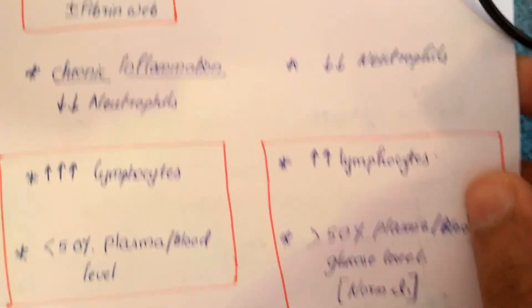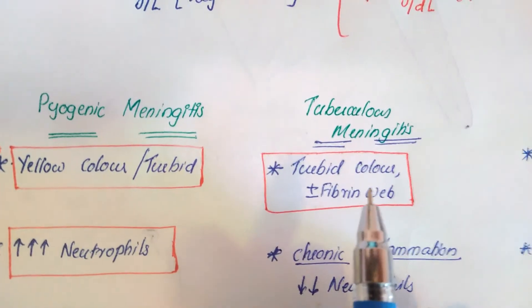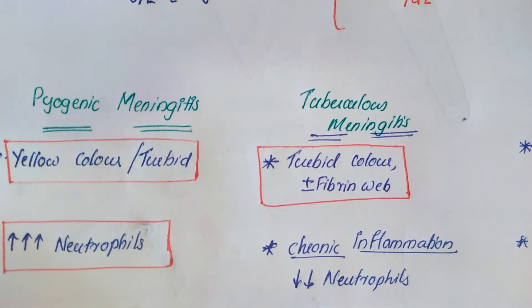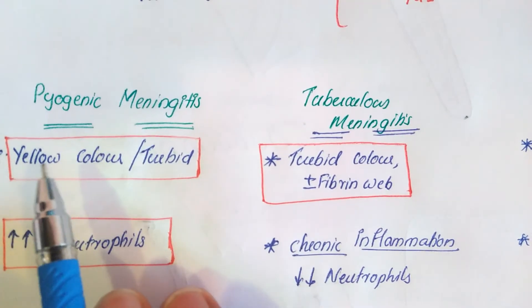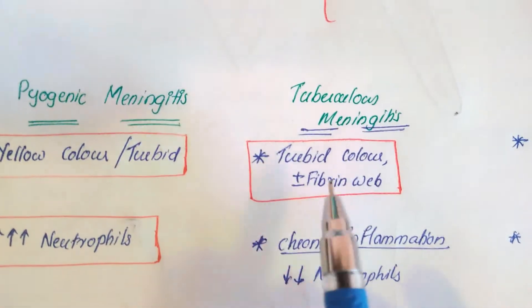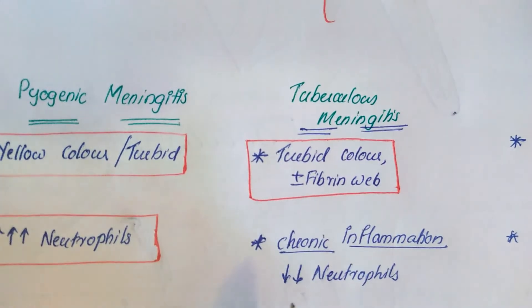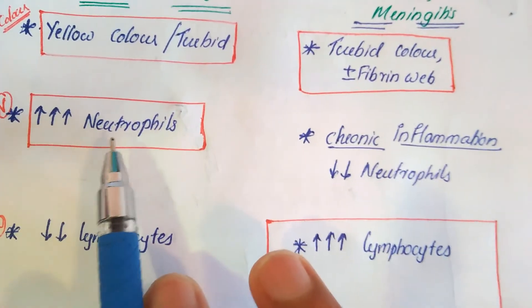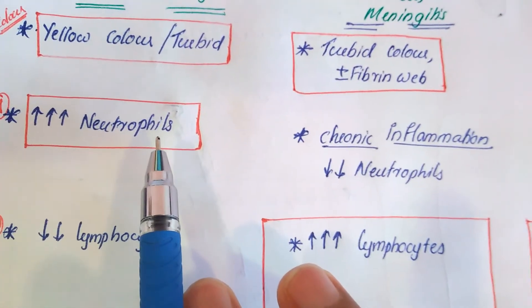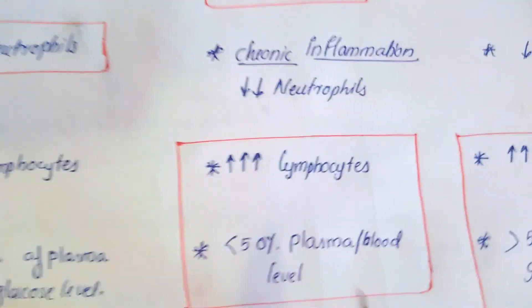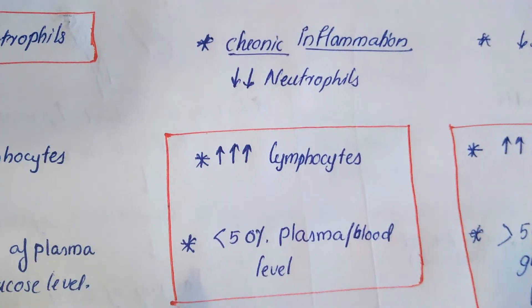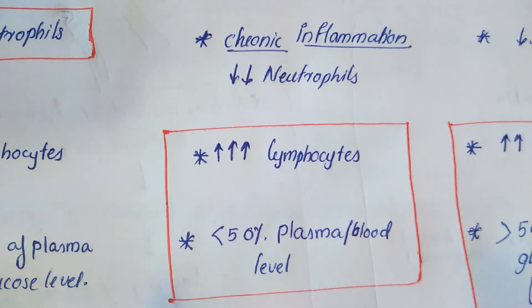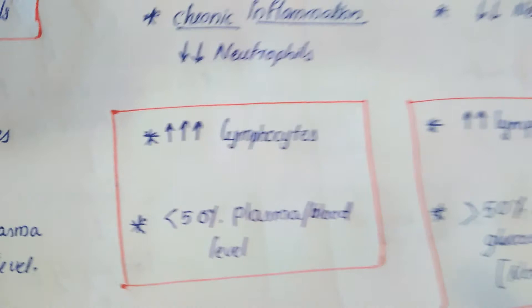We can also differentiate pyogenic meningitis from tuberculosis meningitis by CSF color — pyogenic is yellow or turbid, while tuberculosis may show a fibrin web. In terms of cells, neutrophils are very high in pyogenic meningitis, whereas lymphocytes are very high in tuberculosis meningitis. I hope this video is helpful.